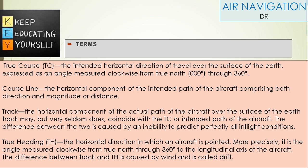Track: The horizontal component of the actual path of the aircraft over the surface of the earth. Track may, but very seldom does, coincide with the true course or intended path of the aircraft. The difference between the two is caused by an inability to predict perfectly all in-flight conditions.